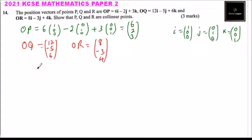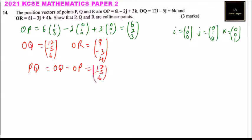Now we can find vector PQ, which equals OQ minus OP. We have OQ as (12, -5, 6) minus OP which is (6, -2, 3). Note the j-component of OP is minus 2, so we must account for that sign carefully.